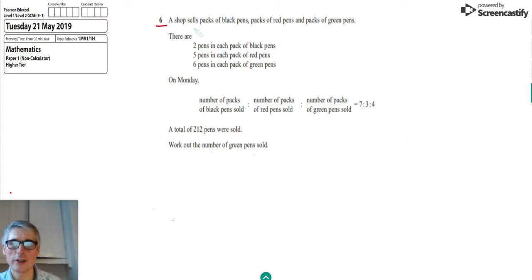So it says here that a shop sells packs of black pens, packs of red pens, and packs of green pens. In each pack there are two black pens, five pens in each pack of red pens, and six pens in each pack of green pens. We're given the ratio of the number of packs of each: the number of black packs to the number of red packs to the number of green packs is seven to three to four. We're told that there are 212 pens that were sold in total, so we've got to work out the number of green pens that have been sold.